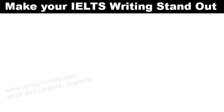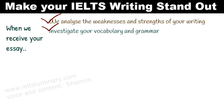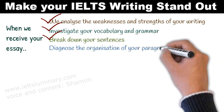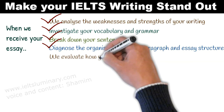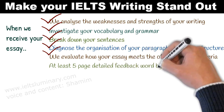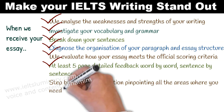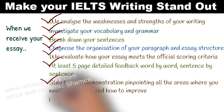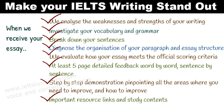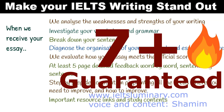In other words, when we receive your essay, we analyze it to identify your weaknesses and strengths, investigate your vocabulary and grammar, break down your sentences, and diagnose the organization of your paragraphs and essay structure. Overall, we evaluate how your essay meets the official scoring criteria. We give you at least a five-page detailed feedback, word by word and sentence by sentence, with step-by-step demonstration pinpointing all areas for improvement. We also provide important resource links and study content. Confirming your 7+ band score in writing is our goal — get this incredible support before it's too late.